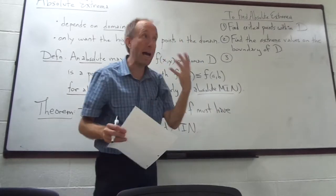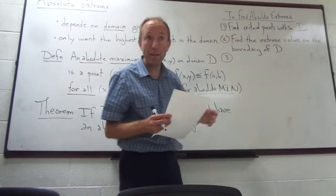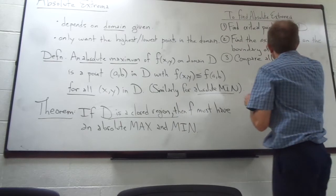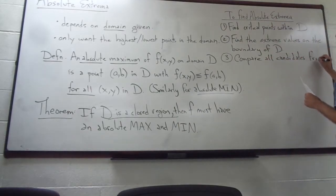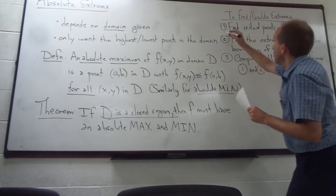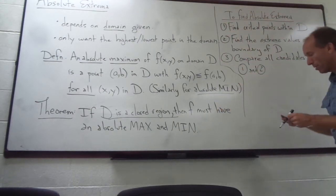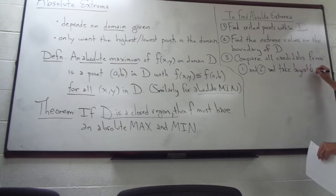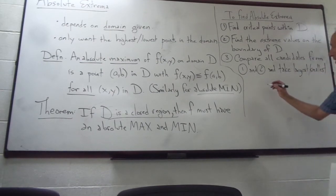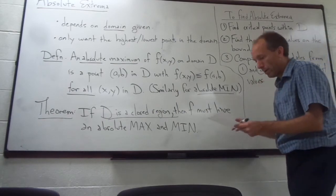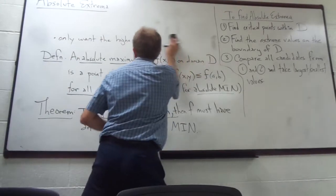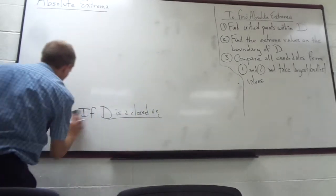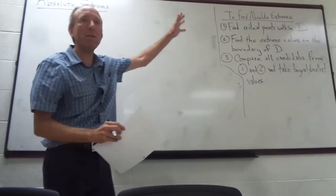Step three: once you have all the points from steps one and two, compare all candidates. Take all of those candidates and find the largest and smallest values — that's your answer. Let me do one example to show you this three-step process.